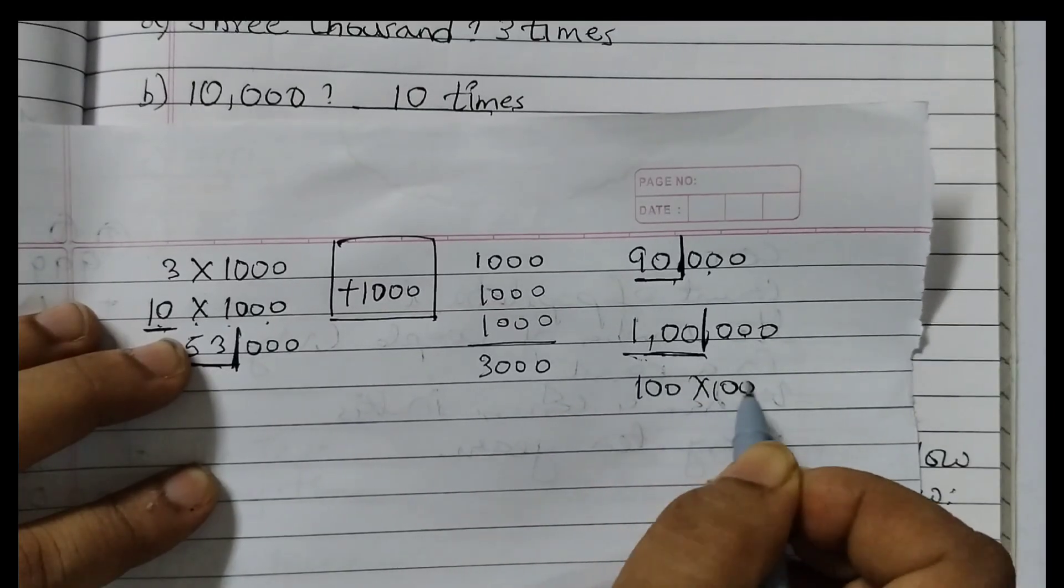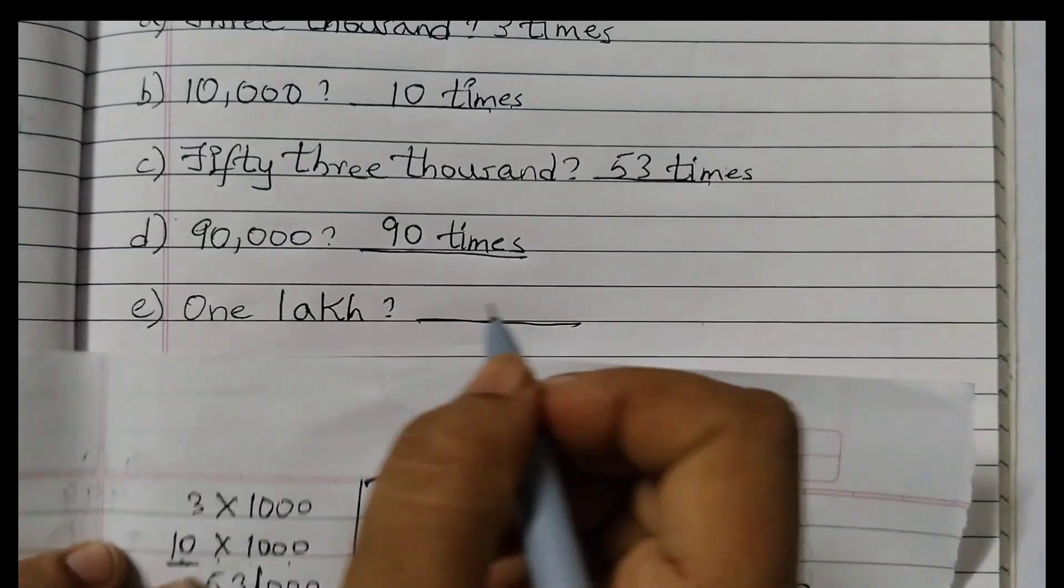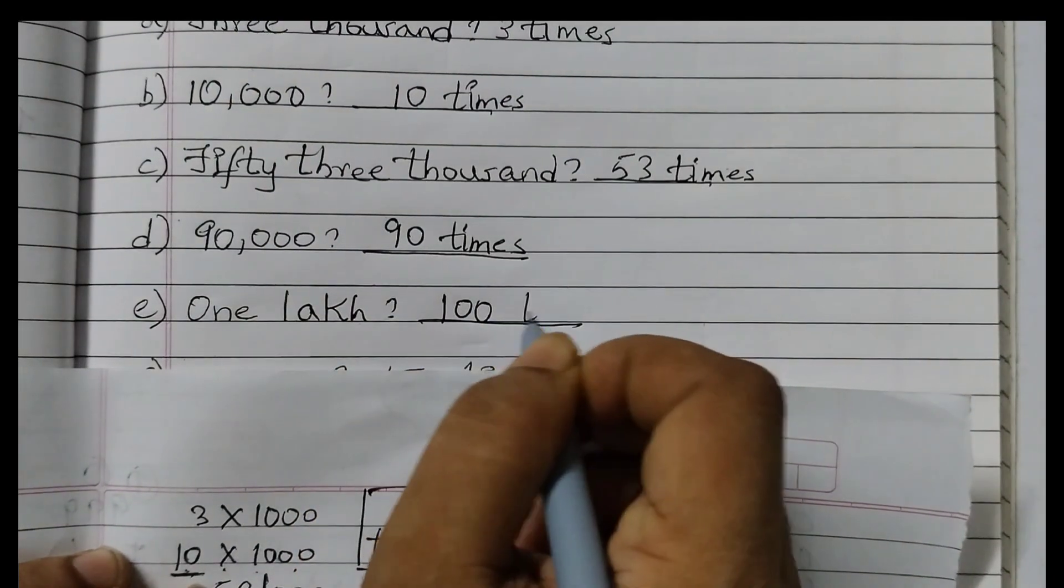100 into 1000 will give you this number. So this is your answer: 100. 100 times.